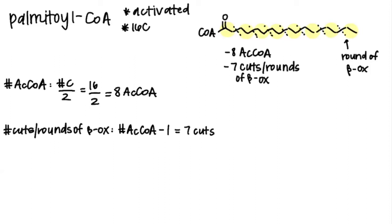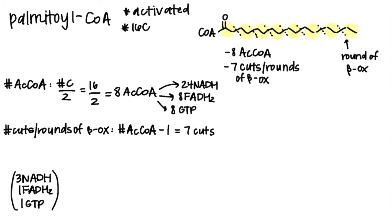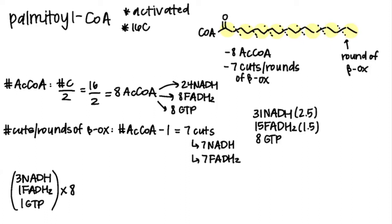Now we see what each yields. If we put eight acetyl-CoA through the TCA cycle, we get 24 NADH, eight FADH2, and eight GTP — calculated by taking products from one turn of the TCA cycle and multiplying by eight. From the seven cuts, each round of beta oxidation yields seven NADH and seven FADH2. We multiply NADH by 2.5 and FADH2 by 1.5 and add them up, giving us 108 ATP.